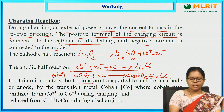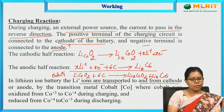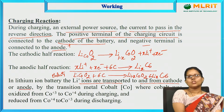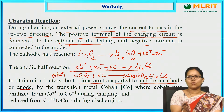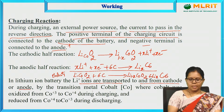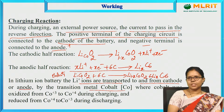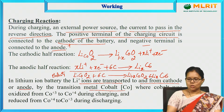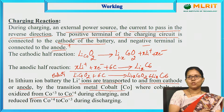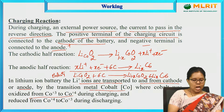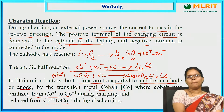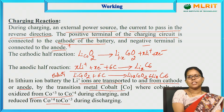In a lithium ion battery, lithium ions are transported to and from cathode and anode — moving from anode to cathode during discharging and cathode to anode during charging. The transition metal cobalt in the complex has oxidation states of +3 and +4. During charging, cobalt is oxidized from +3 to +4, and during discharging it is reduced from +4 to +3. There is a change in the oxidation state of cobalt during charging and discharging.